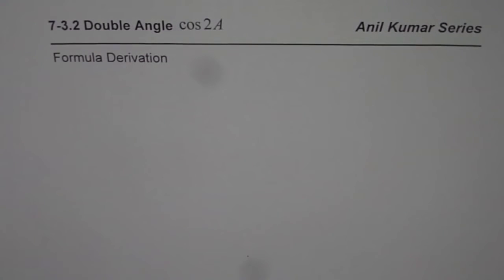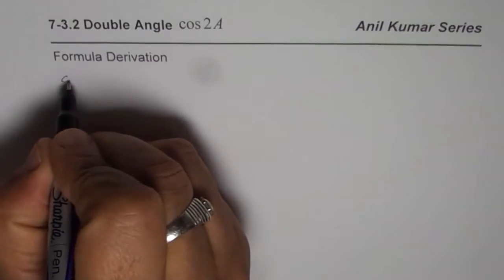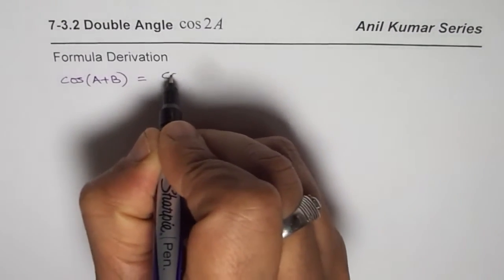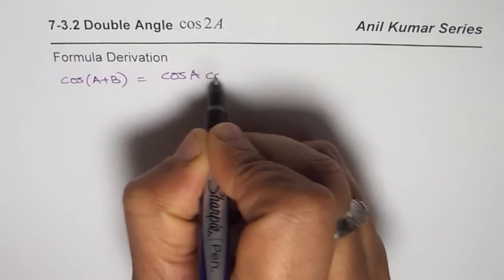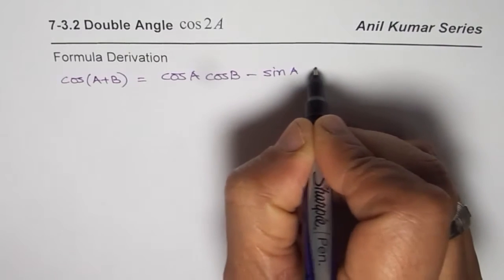I am Anil Kumar and in this series we are exploring double angles. Now let us talk about cos 2A. We will begin with the compound angle formula which is cos A plus B, and as you know cos A plus B is cos A cos B minus sin A sin B.